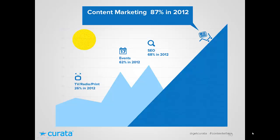About a year ago we surveyed over 400 B2B marketers about their marketing strategies. We found that content marketing was the predominant strategy — number one at 87% of B2B marketers using it. This outpaces SEO at 68%, events at 62%, and TV, radio, and print at 26%. These numbers are from 2012, so they've only increased since then.